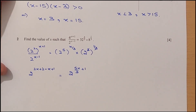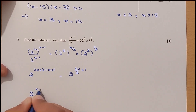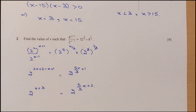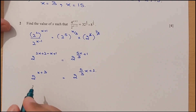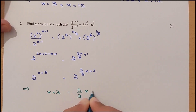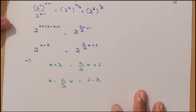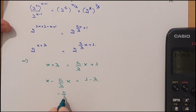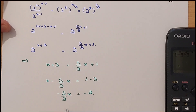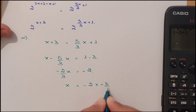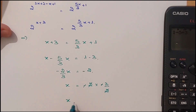Since the bases are the same, we add the powers. We have 2 to the power x plus 3 equals 2 to the power 5 over 3 times x plus 1. Comparing the powers: x plus 3 equals 5 over 3 times x plus 1. So x minus 5 over 3 x equals 1 minus 3, giving minus 2 over 3 x equals minus 2. Multiplying both sides by minus 3 over 2, the 2s and negative signs cancel, giving x equals 3.